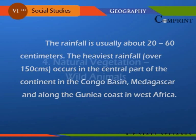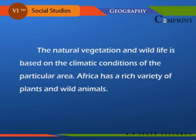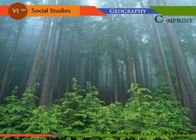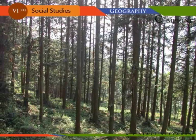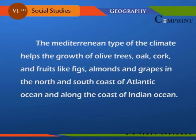Africa has a rich variety of plants and animals. Africa has very thick evergreen forests with broad leaves and hardwood in the central equatorial region. Trees like ebony, mahogany, rosewood, and rubber are found in these forests. The Mediterranean type of climate helps the growth of olive trees, oak, cork, and fruits like figs, almonds, and grapes in the north and south coasts and along the coast of the Indian Ocean.